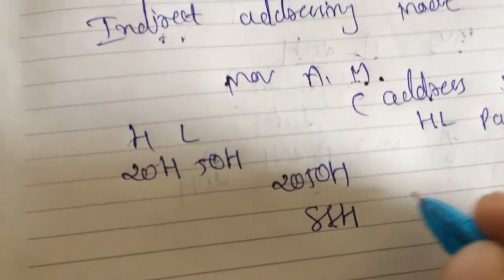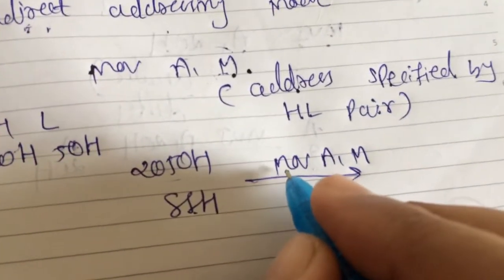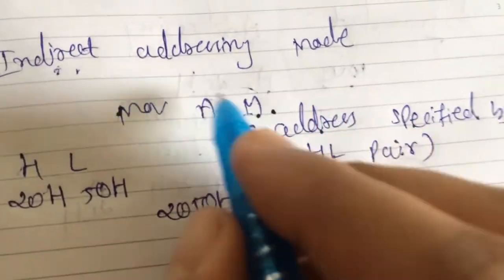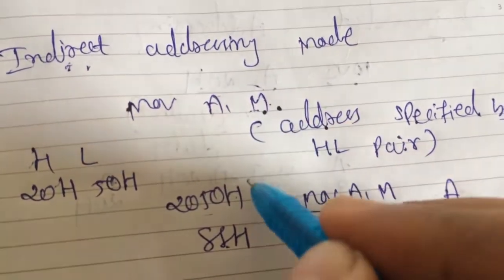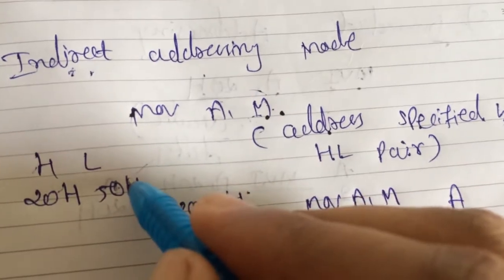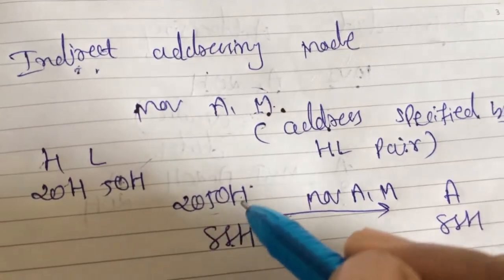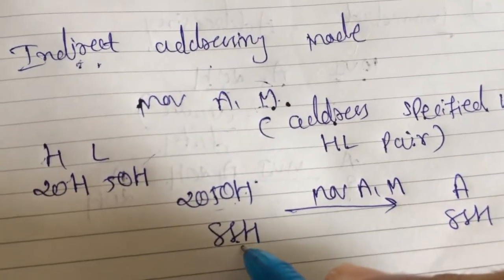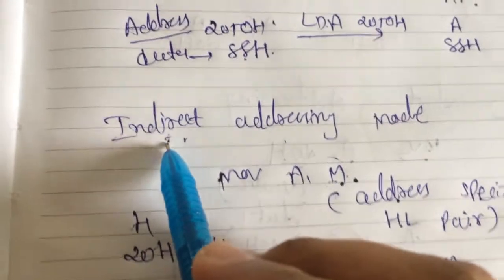If address 2050H contains 88H and we execute MOV A, M, then the accumulator contains 88H. Here we do not specify 2050H directly; instead 2050H is indirectly stored in the HL register pair. Ultimately, HL pair becomes our address, and the content of that address — 88H — is transferred into the accumulator. This is how we differentiate direct and indirect addressing mode.